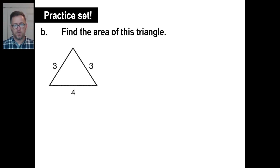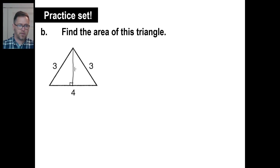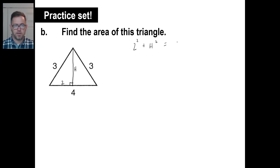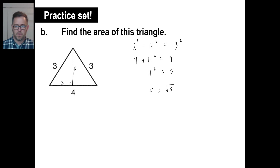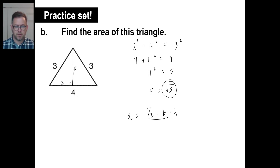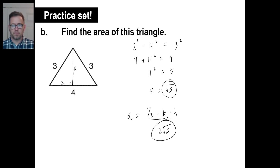Then x equals negative 2 plus 7, which is 5. Now let's find the area of that triangle. Drop the vertical down and get a right triangle. We don't know the height H, but the base of the right triangle is 2. Using the Pythagorean theorem: 2 squared plus H squared equals 3 squared. That's 4 plus H squared equals 9, so H squared equals 5 and the height is the square root of 5. The area is one half times 4 times the square root of 5, which is 2 times the square root of 5.